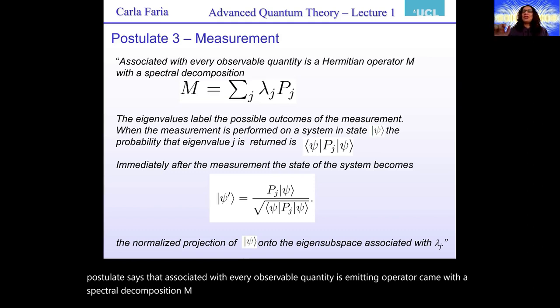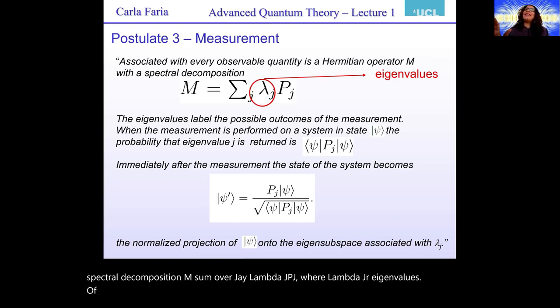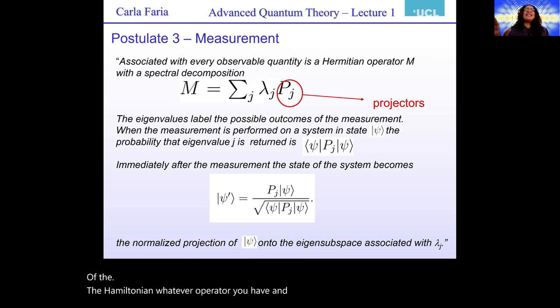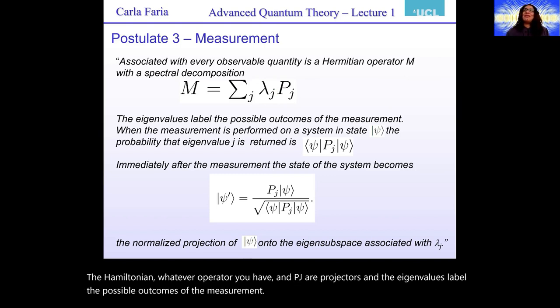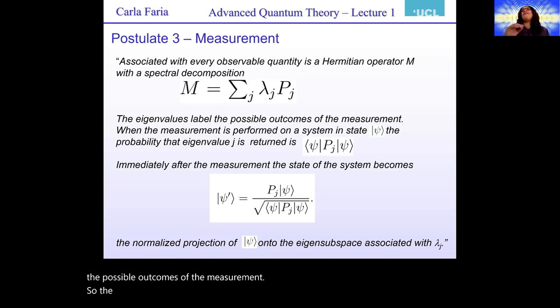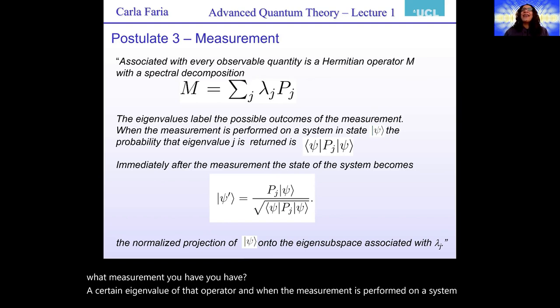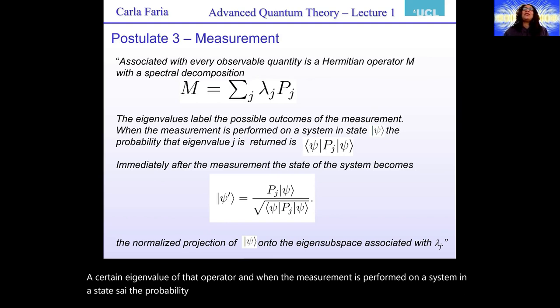And this postulate says that associated with every observable quantity is a Hermitian operator M, with a spectral decomposition M equals sum over j, lambda j, pj, where lambda j are eigenvalues of the Hermitian operator, whatever operator you have, and pj are projectors. And the eigenvalues label the possible outcomes of the measurement. So depending on what measurement you have, you have a certain eigenvalue of that operator.